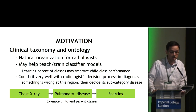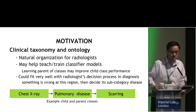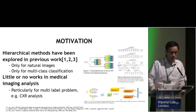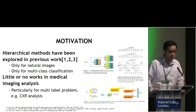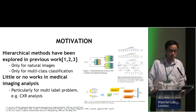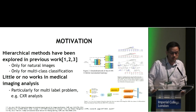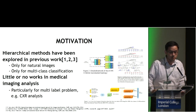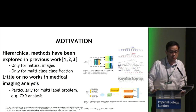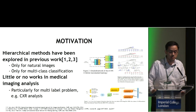This could also fit very well with the radiologist decision process in diagnosis. They may find something is wrong at a region, then decide what the subcategory disease is. In terms of the research, these hierarchical methods have been explored in previous work, but mainly for natural images, and only for multi-class classification.